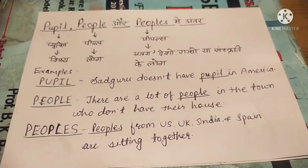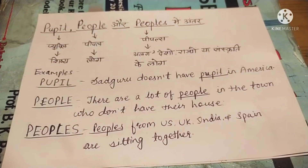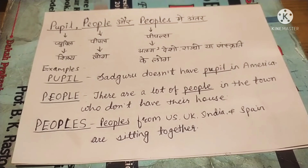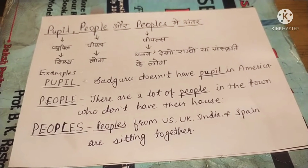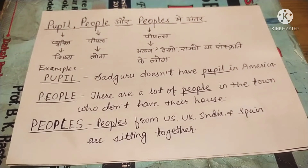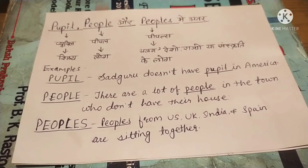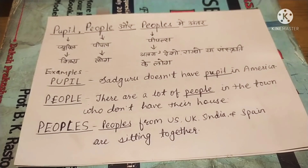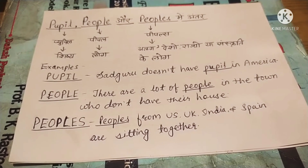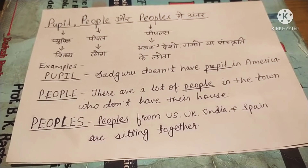Hello students, good evening! How are you all? Fine, everyone is fine. Good. So today we are here discussing about three words: pupil, people, peoples. Before doing this, welcome all of you to our class. I think you all are better at home, so now we start our lesson.